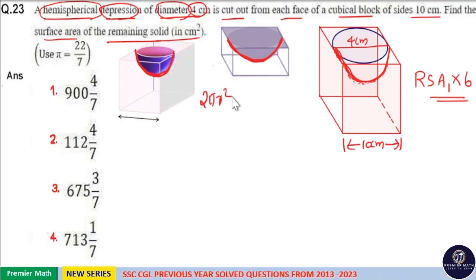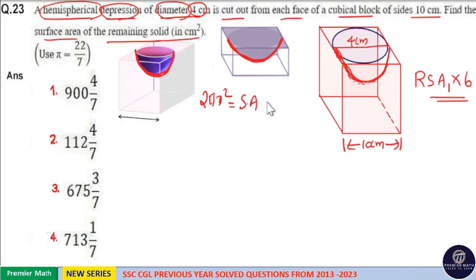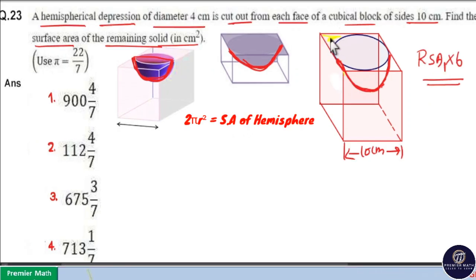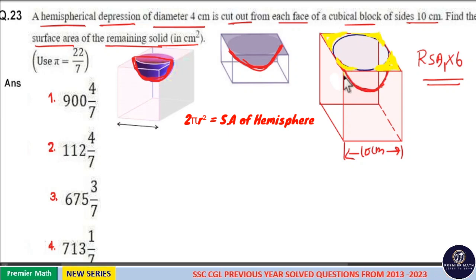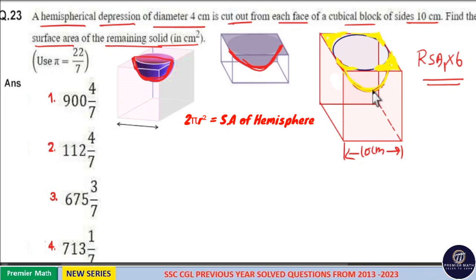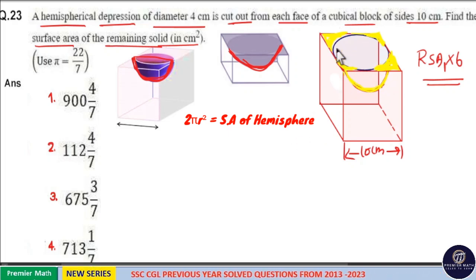This curved surface area is nothing but 2πr², which is the surface area of a hemisphere. Apart from this, if you look at the 4 corners of the top face, those 4 corners are also part of the remaining surface area. So, the 4 corners plus the depression's curved surface area make up the remaining surface area of this top face.